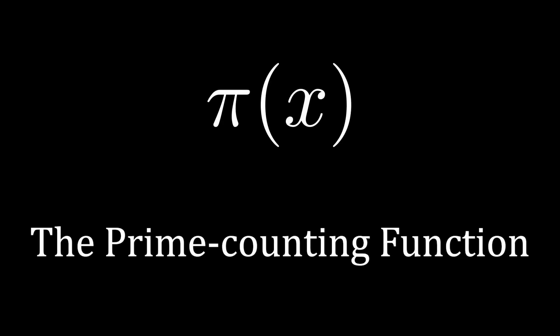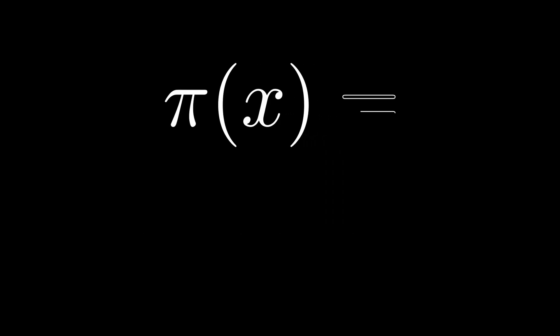I'd like to begin by discussing the prime counting function, typically denoted with the Greek letter π. This function gives you the number of primes below a given number.